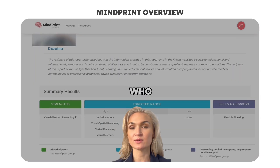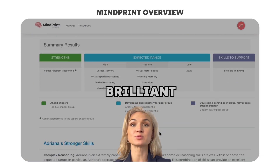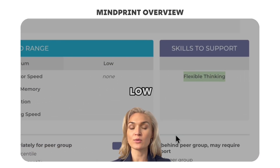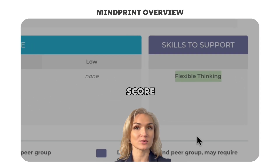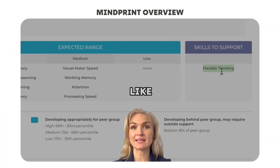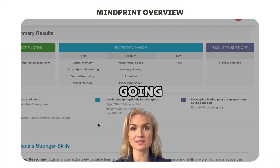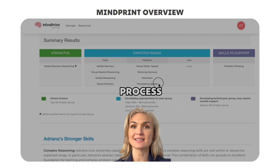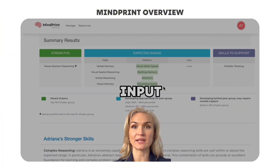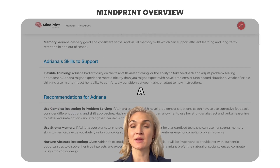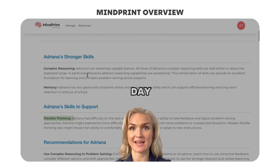I have this student who is otherwise brilliant, but they have a low flexible thinking score. In a situation like this, I know that this student is going to process all of the verbal input in a fixed way, which can be a problem on test day.